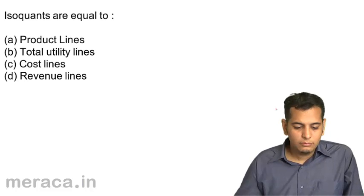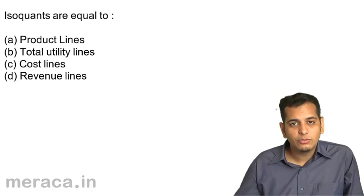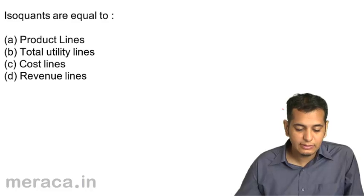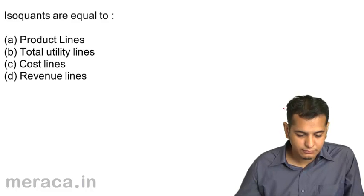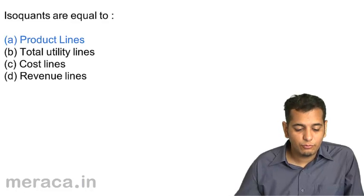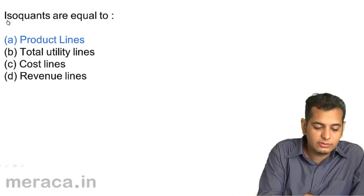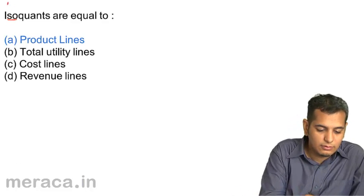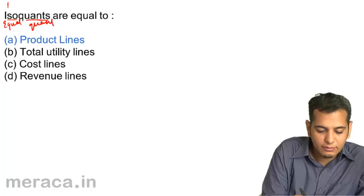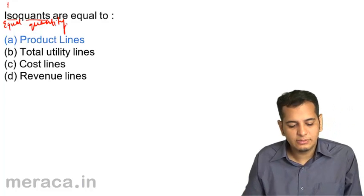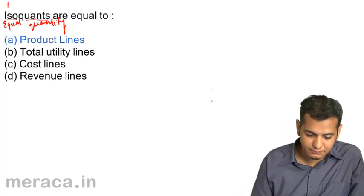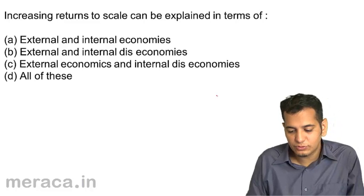Let's do a short quiz. Isoquants are equal to: a) product lines, b) total utility lines, c) cost lines, d) revenue lines. The answer is product lines — 'iso' means equal and 'quants' means quantity produced, so these are called product lines as well.